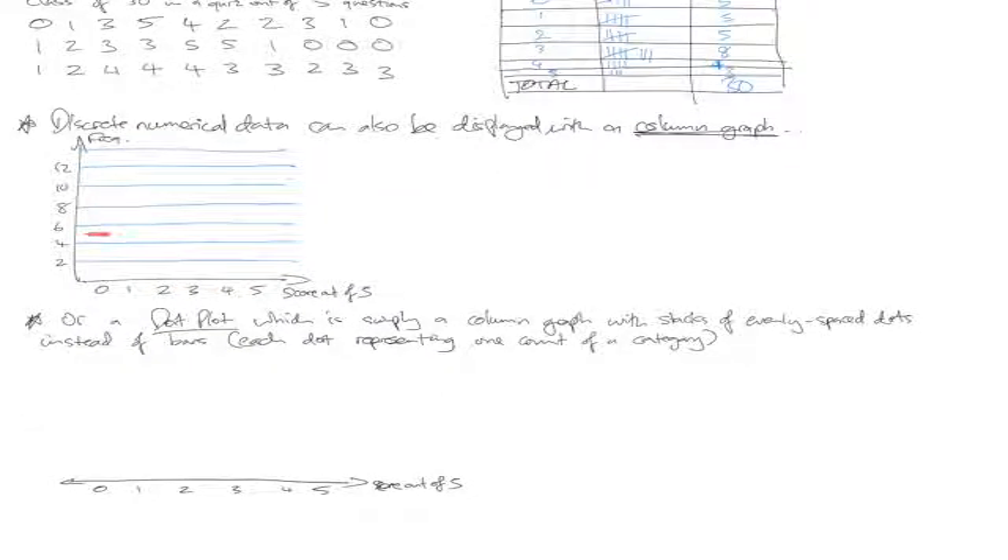So 0, the score of 0 happened 5 times, so 5 goes between 4 and 6. The score of 1 happened 5 times as well. The score of 2 happened 5 times as well. The score of 3 happened 8 times. The score of 4 happened 4 times. The score of 5 happened 3 times.